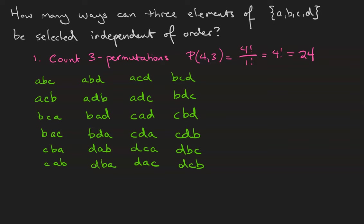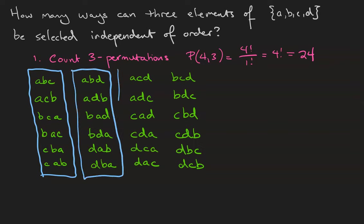And what we'll notice next is that for each of these three permutations there are six ways to order it. Notice, for example, that ABC, ACB, BCA, BAC, CBA, and CAB are all the same unordered sample. Likewise with all the permutations of ABD, all the permutations of ACD, and all the permutations of BCD.